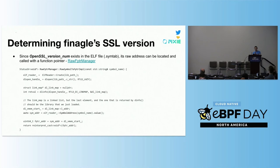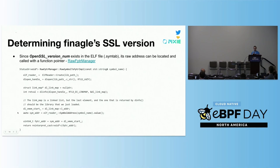Starting from the first challenge, let's talk about how we determined the Finagle TLS version. That OpenSSL version num function is in the ELF file, so one way to solve this is to calculate its raw address and call the function with a raw function pointer. The code on this slide is an abridged version of Pixie's raw function pointer manager. We use an ELF parser, DL-open the library so it's accessible in the user space daemon's virtual memory, determine the symbol offset using the ELF parser, and add that to where the library is loaded in virtual memory — giving us the function pointer we need.